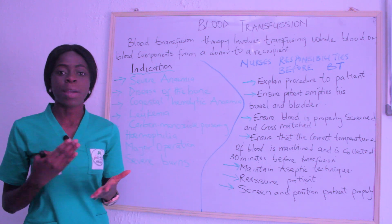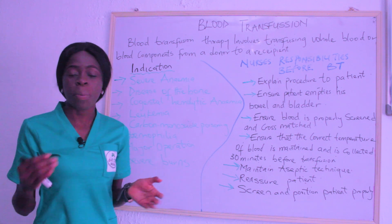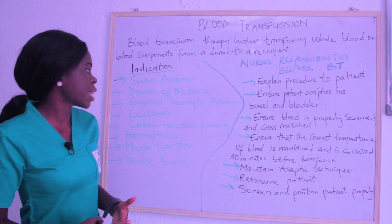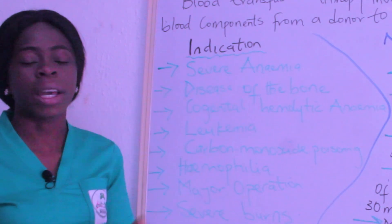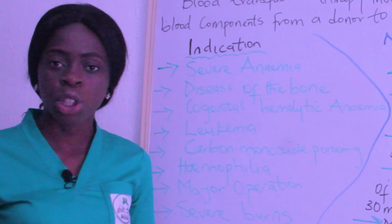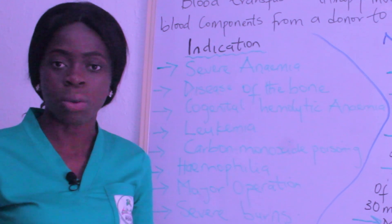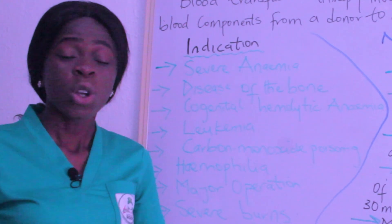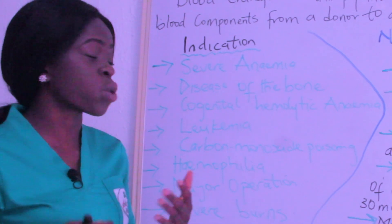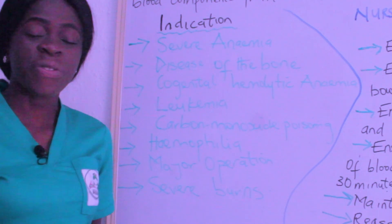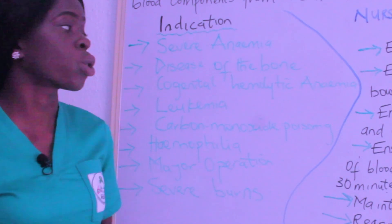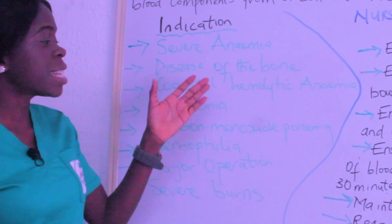Why would you give your patient blood? There must be an indication for it. The first indication is severe anemia. Anemia is a reduction in the red blood cell count or the hemoglobin count, and when there is severe anemia, one intervention is to transfuse blood.